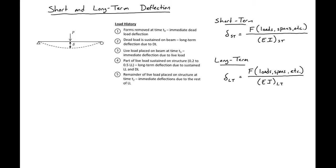When we apply a load to a structure, we're going to have some kind of deflection or deformation. This deflection is going to be dependent on the magnitude and type of loading applied, the span and end conditions of the beam or member we're looking at, and also the material stiffness and section properties. The deflection is also dependent on time. We can break up our deflection into two components: short-term deflections and long-term deflections. Short-term deflections are immediate, while long-term deflections are a result of sustained load, happening over some period of time, and are primarily due to creep in our concrete.